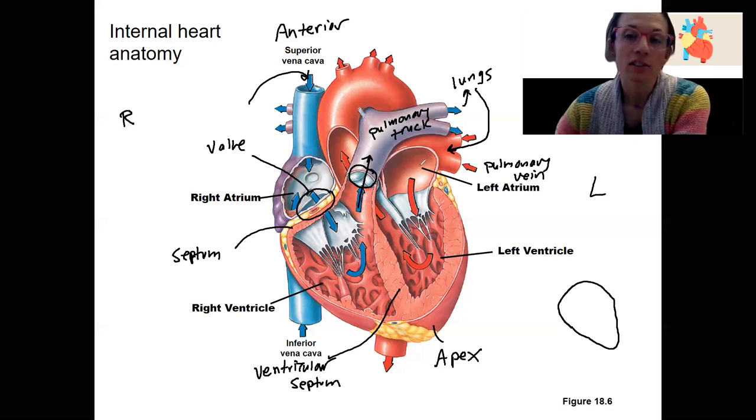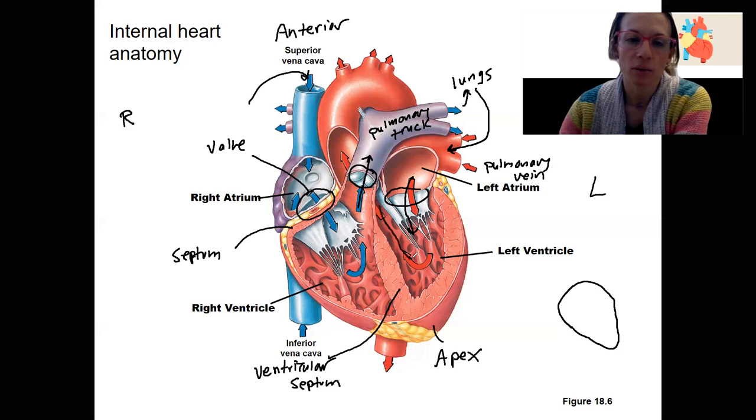Entering the left atrium, we now have oxygen in our blood. The left atrium is going to hold the blood for a little bit. Then it's going to travel through this valve to the left ventricle. Left ventricle is very muscular, very strong. It's going to contract and force blood out through the aorta.